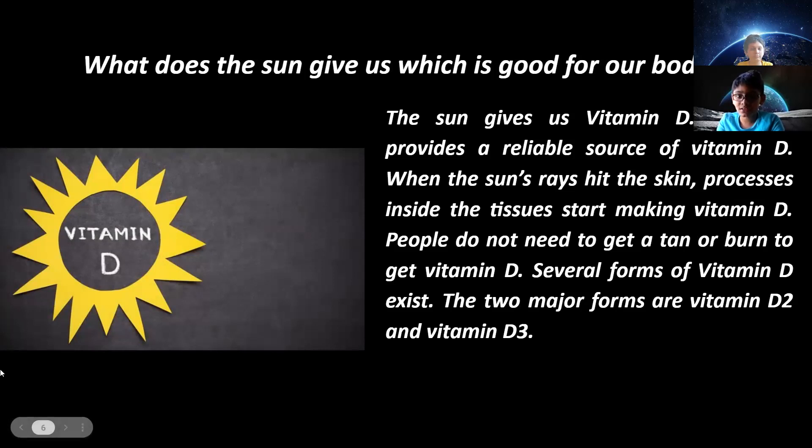When the sun's rays hit the skin, processes inside the tissues start making vitamin D. People do not need to get a tan or burn to get vitamin D. Several forms of vitamin D exist. The two major forms are vitamin D2 and vitamin D3.